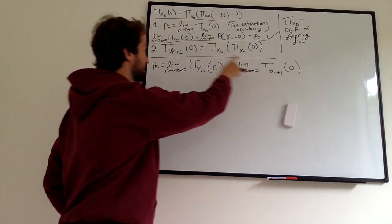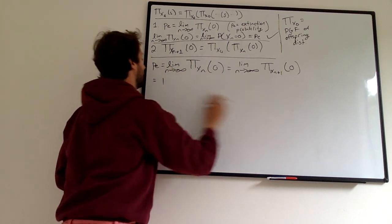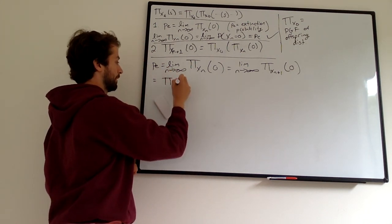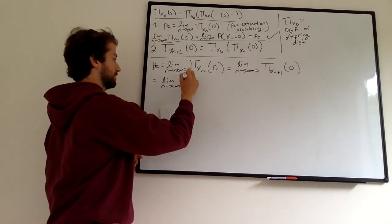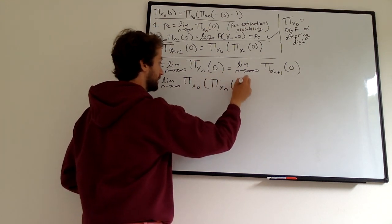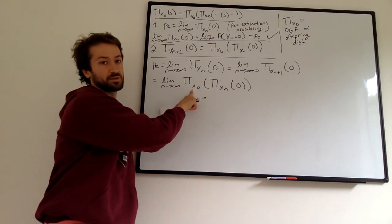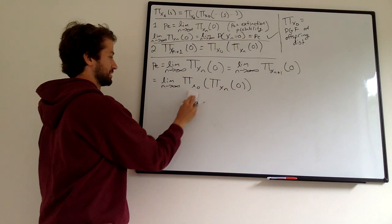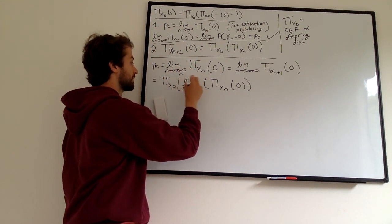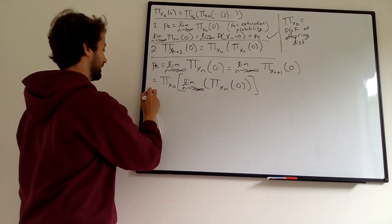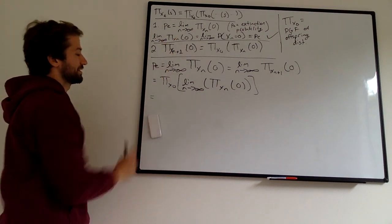Now we use Fact 2 and substitute for the PGF of X sub N plus one. We get the limit as N goes to infinity of the PGF of the offspring distribution evaluated at the PGF of X sub N evaluated at zero. Since the offspring PGF is a continuous function, we can pull it outside the limit, giving the PGF of the offspring distribution evaluated at the limit as N goes to infinity of the PGF of X sub N evaluated at zero.